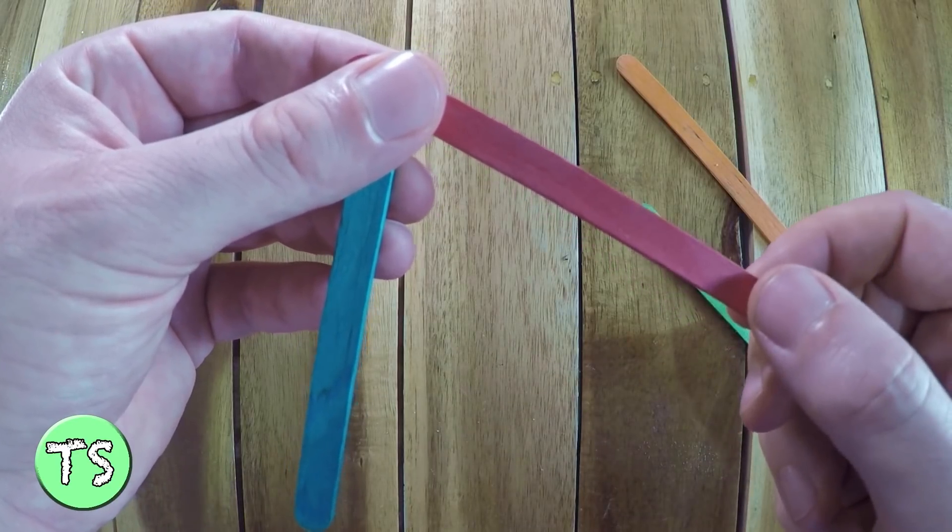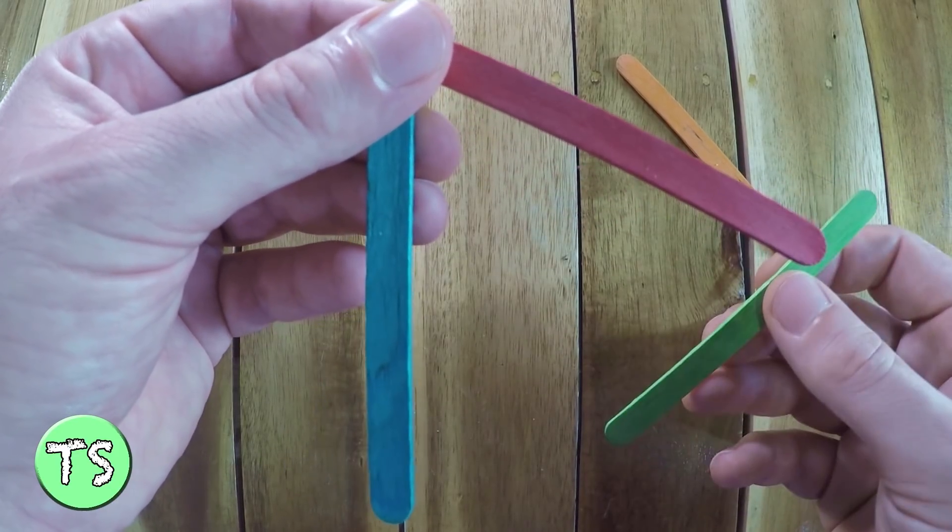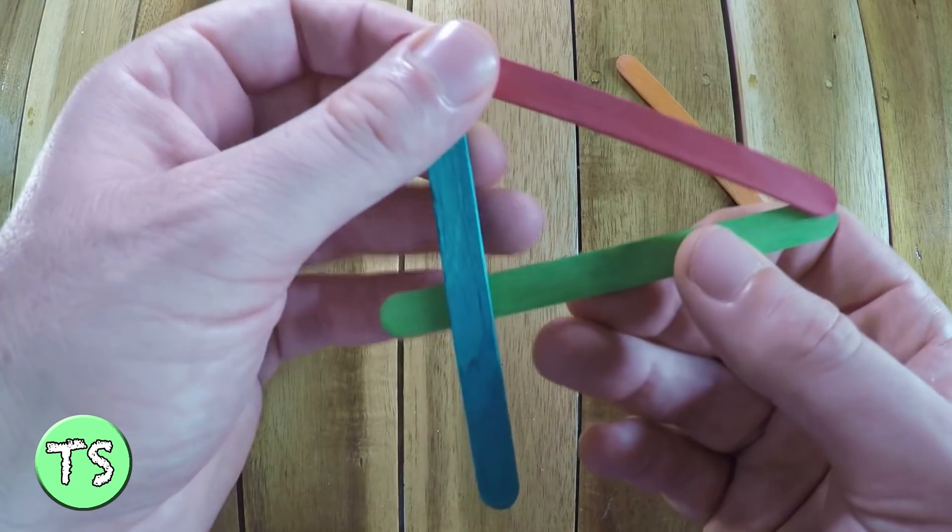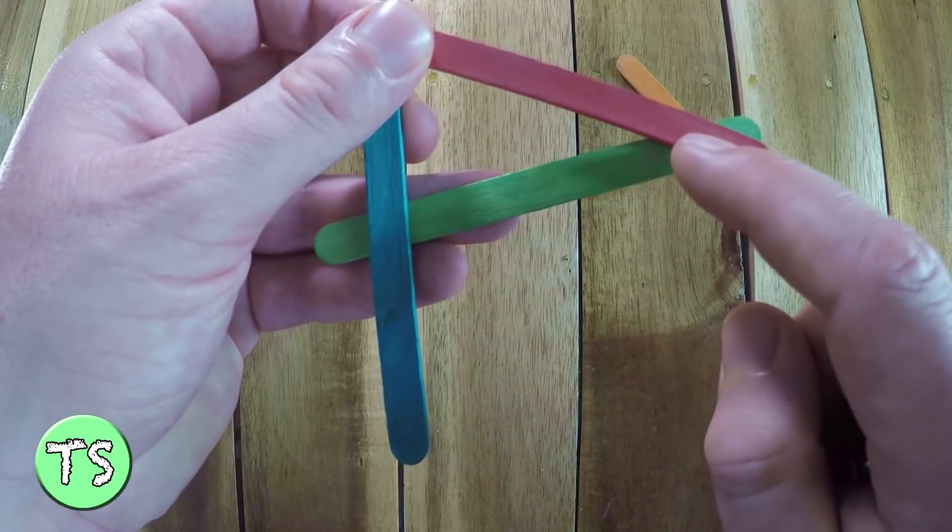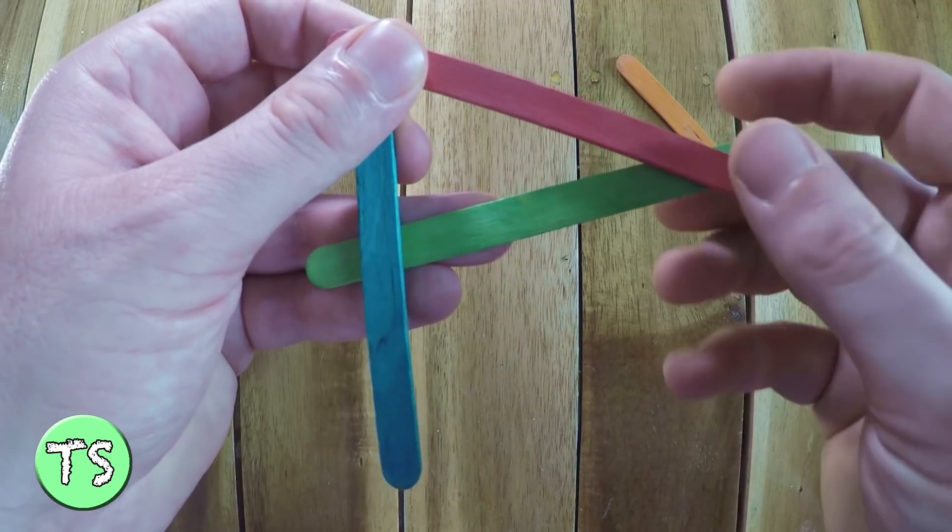The next stick, this green one, goes under the blue and red sticks. It needs to go from the middle of the blue stick to the end of the red stick like this.